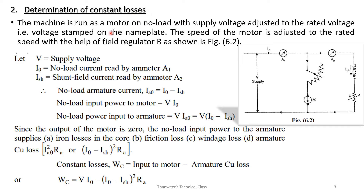For determination of constant losses, the machine is run as a motor on no load with the supply voltage adjusted to the rated voltage — that is, the voltage stamped on the nameplate. The speed of the motor is adjusted to the rated speed with the help of a field regulator R, as shown in Figure 6.2.